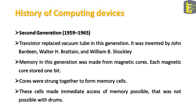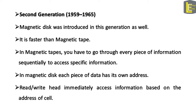The second generation of computers is counted from 1959 to 1965. The biggest invention in this generation was the transistor, which replaced vacuum tubes in computers. It was invented by John Bardeen, Walter H. Brattain, and William B. Shockley. Computer memory in this generation was made from magnetic cores. Each magnetic core stored one bit, and cores were strung together to form memory cells. These cells made immediate access of memory possible, which was not possible with drums. In this generation, the auxiliary storage device, the magnetic disk, was introduced. It is faster than magnetic tape. In magnetic tapes, you have to go through every piece of information sequentially to access specific information. In a magnetic disk, each piece of data has its own address, and the read or write head immediately accesses information based on that address.